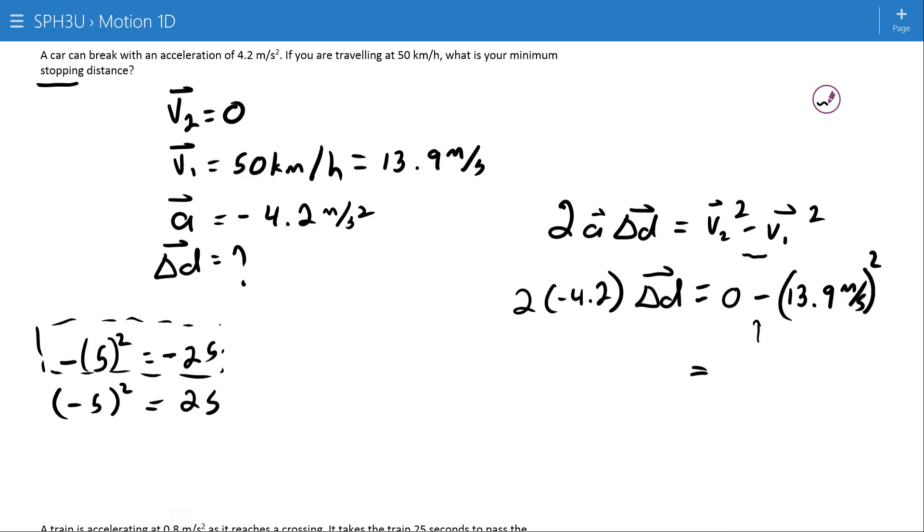Anyway, 13.9 squared is 193.21, so that's negative 193.21. And 2 times negative 4.2 is negative 8.4 delta D.